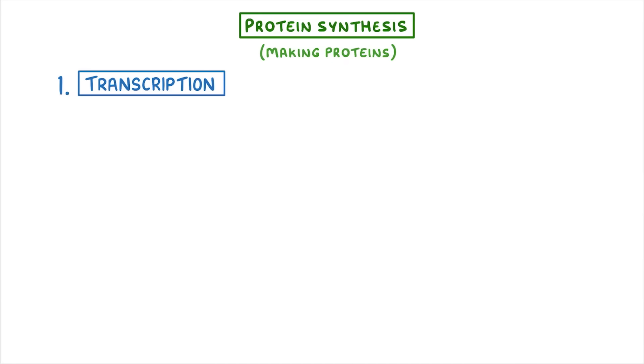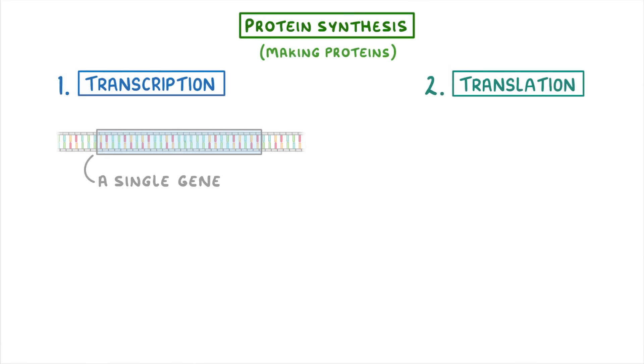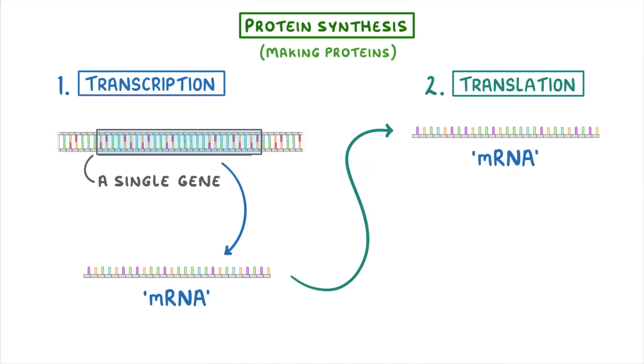In today's video, we're going to take a closer look at protein synthesis, which is the process of making proteins. We can think of this in terms of two steps: transcription and translation. In a nutshell, transcription is the process of taking a single gene of DNA and copying it into a structure called mRNA. Then translation is the process of taking this mRNA strand and using it to produce a protein.